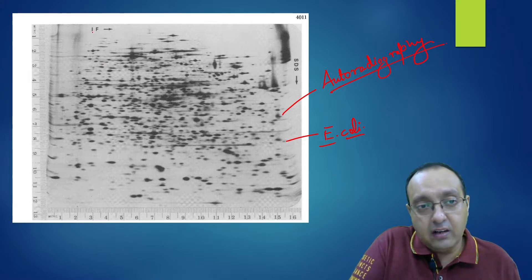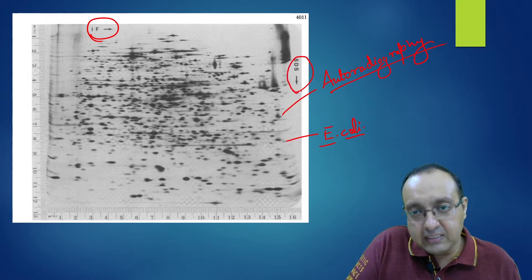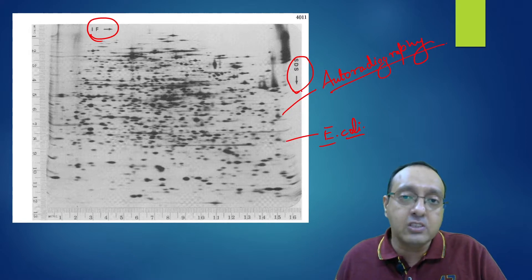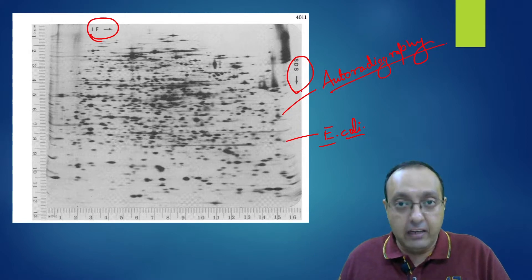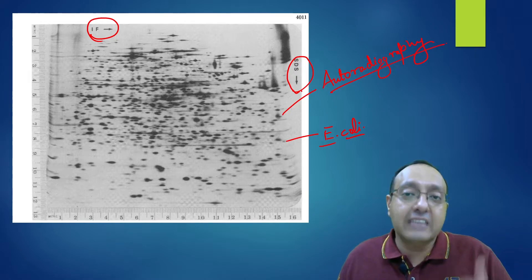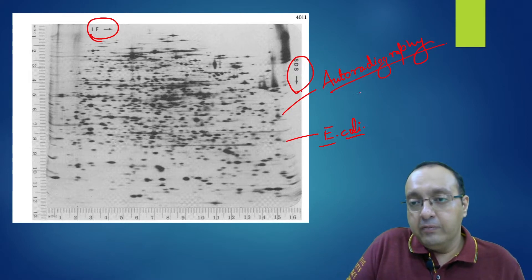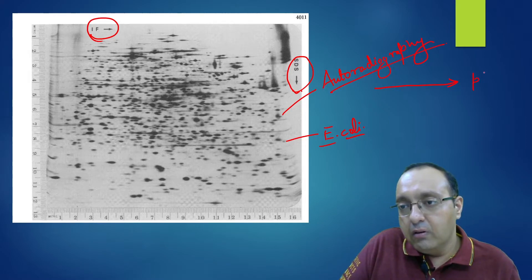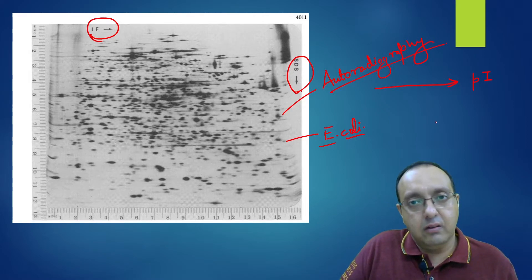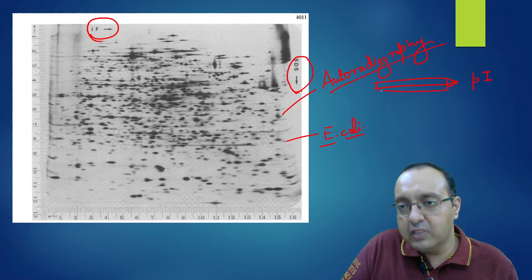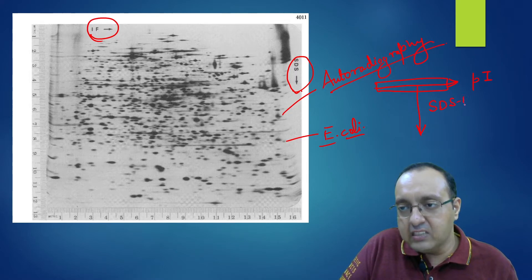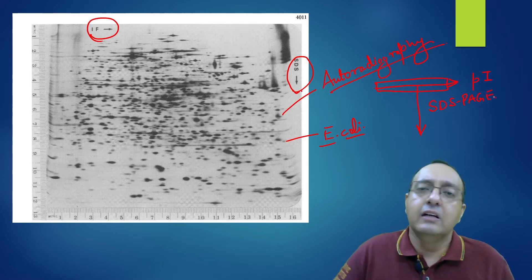Notice there are two indicators: IEF and SDS. These are the two dimensions of two-dimensional gel electrophoresis. The first dimension is isoelectric focusing, or IEF, which separates the proteins according to their pI. The second dimension is SDS-PAGE, which separates them according to their molecular weight.